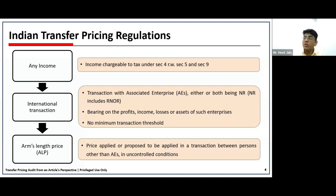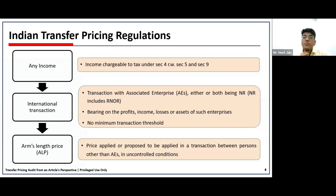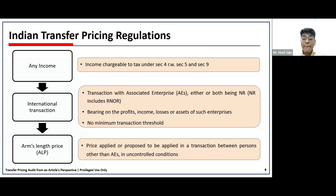The second requirement is that the international transaction should have a bearing on profit, income, losses, or assets of the enterprise. There is no minimum transaction threshold in international transaction. The question arises: what types of transactions get covered? It would be all transactions that have an impact on the income of the entity, as well as transactions of a capital nature.